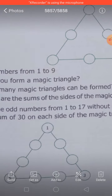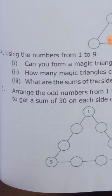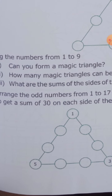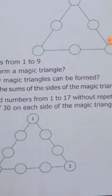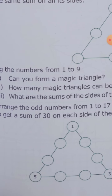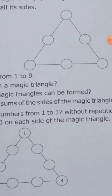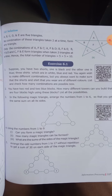So using the numbers from 1 to 9, can you form a magic triangle? Yes, we can form a magic triangle. How many triangles can be formed? 5 triangles can be formed. What are the sums of the sides of the magic triangle?